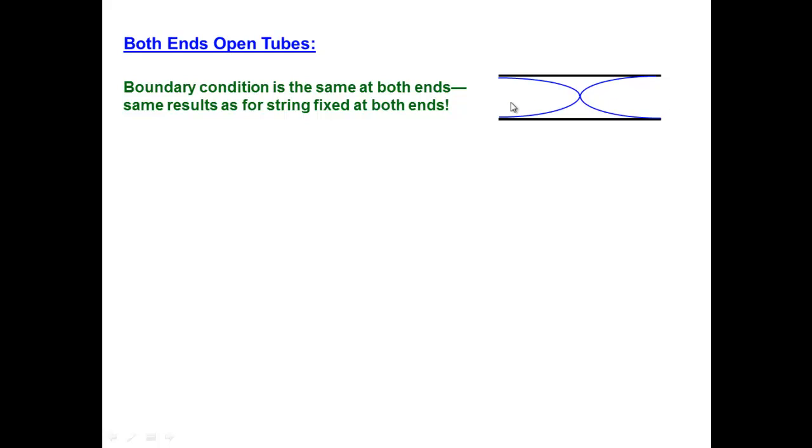And in this case, we see that both ends have the same boundary condition. That's exactly what we found for a string that's fixed at both ends. In the case of the string, the end points were nodes. In the case of a pipe or a tube open at both ends, the ends are anti-nodes. But, they're the same.